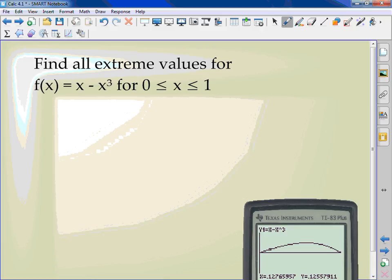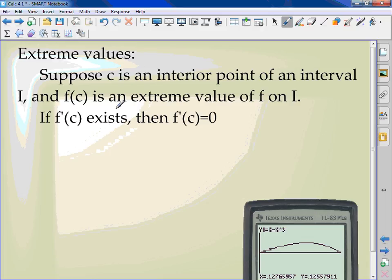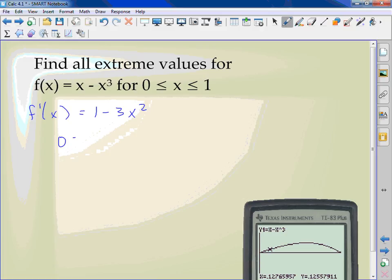Find all the extreme values for f of x equals x minus x cubed. Without using the calculator, this is what we're going to do. We're going to find the extreme values. Take the derivative of x. 1 minus 3x squared. Now, what this was saying is taking the derivative and setting it equal to 0. So it's going to be 0 equals 1 minus 3x squared.